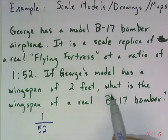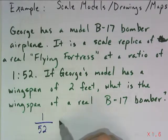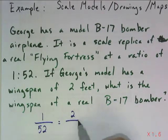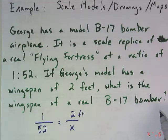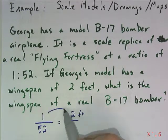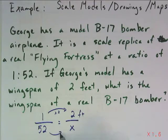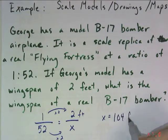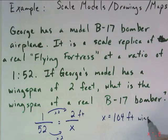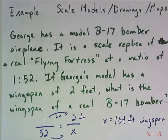So since my model has a wingspan of 2 feet, that is going to match up with x on the actual bomber. So 2 feet here. And you can just pretty quickly figure out that the scale factor is times 2. So when I multiply times 2, I see that x equals 104 foot wingspan on the actual bomber.